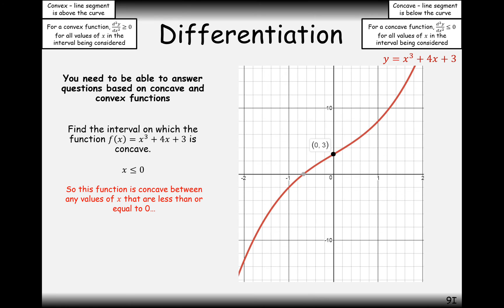We can see how this works then. For any value x less than zero, this is the region of the graph where the gradient is getting smaller and smaller. In other words, if you were to connect a line segment, it's going to be underneath the graph — below the curve. So that's why it's concave.